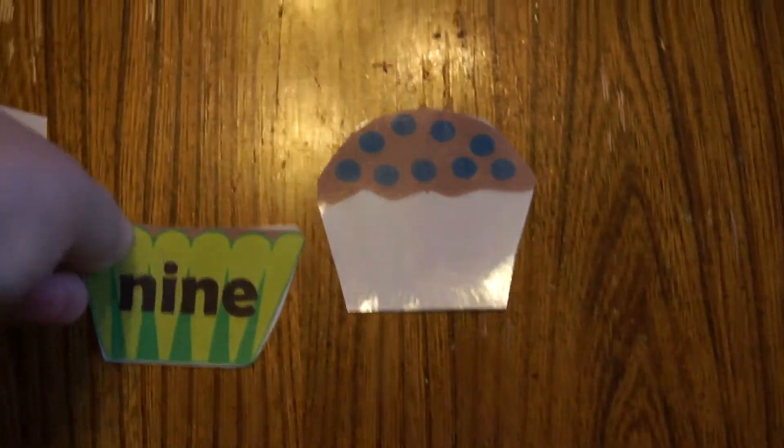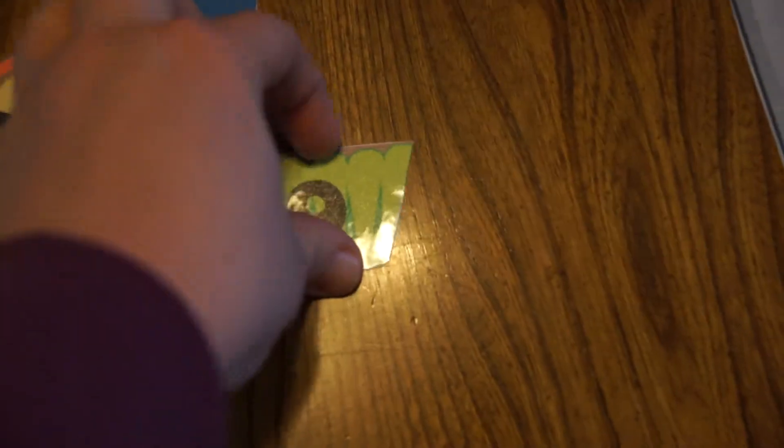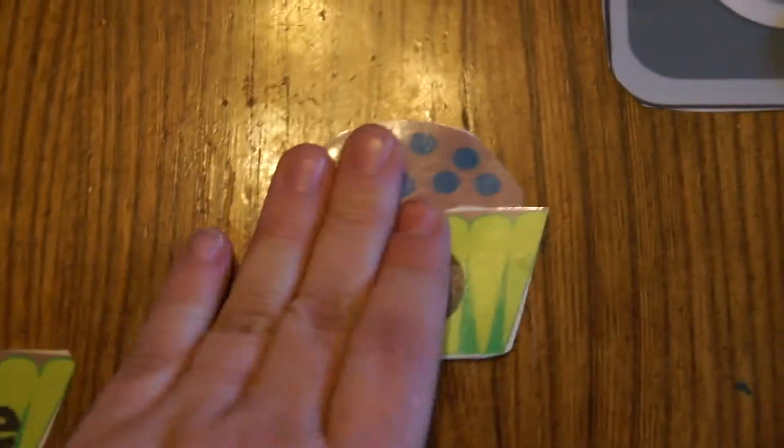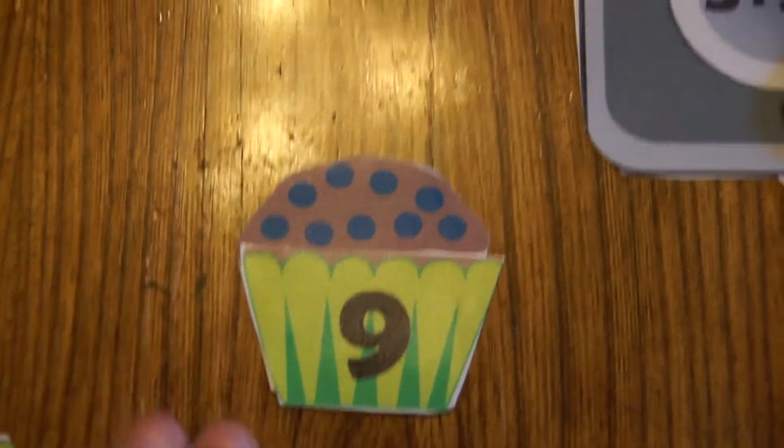So we look over here, and we find our liner that says nine. And we're going to find our number that also says nine. So for toddlers, this is as far as they're going to go. They're just going to make this little cupcake and match it up here.